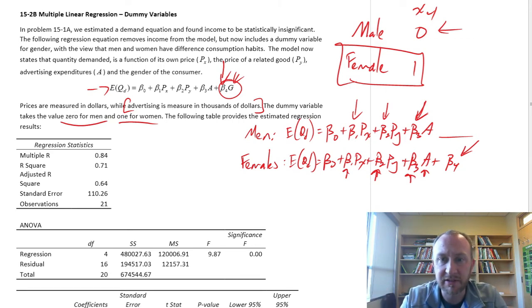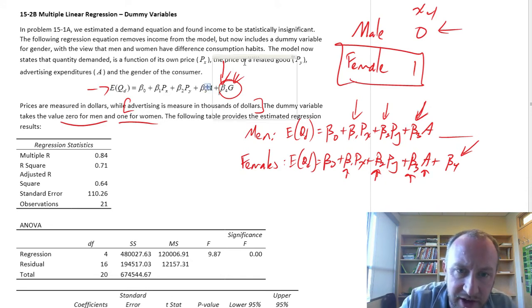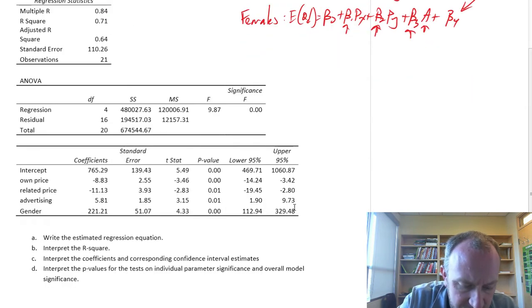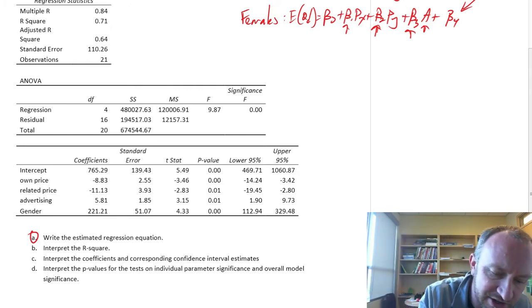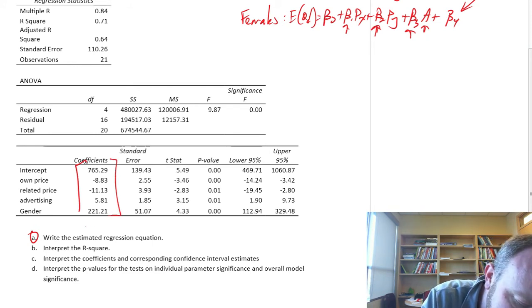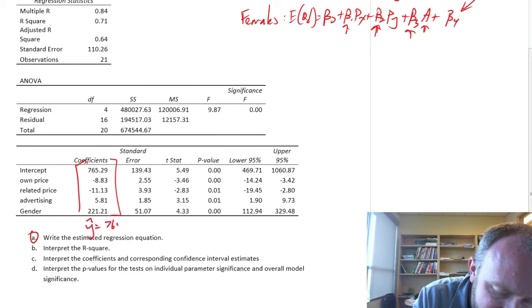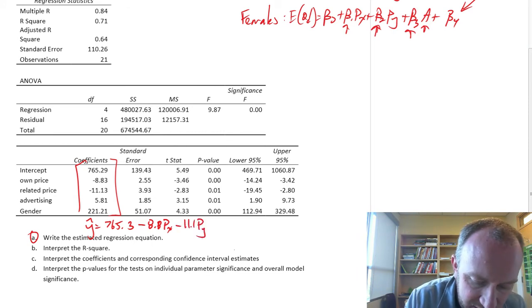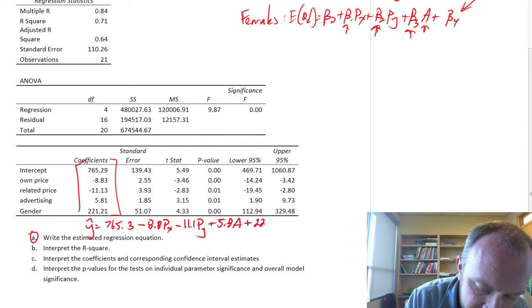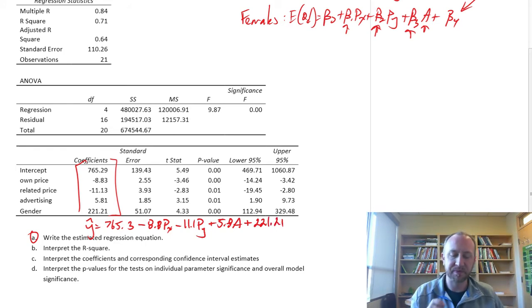Let's go through the exercise. Here we go down, we have all of our same types of problems to deal with. Write the estimated regression equation. These are all my coefficients. y-hat equals 765.3 minus 9.0 times its own price minus 11.1 times price of related good plus 5.8 times advertising plus 221.2 times gender.